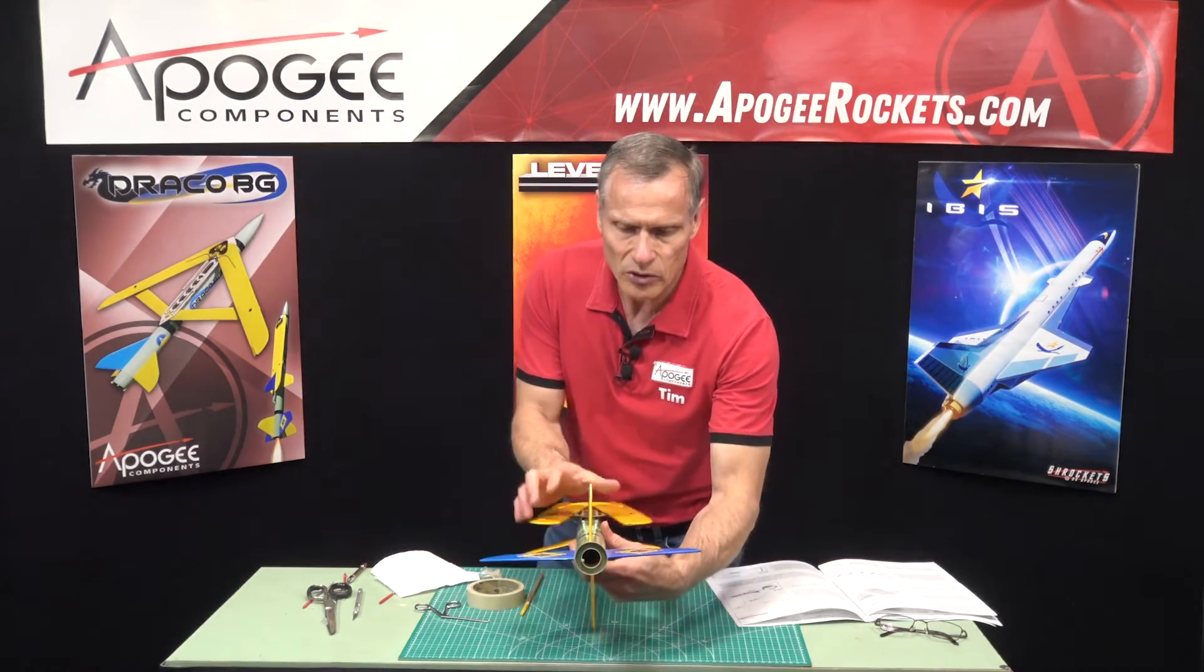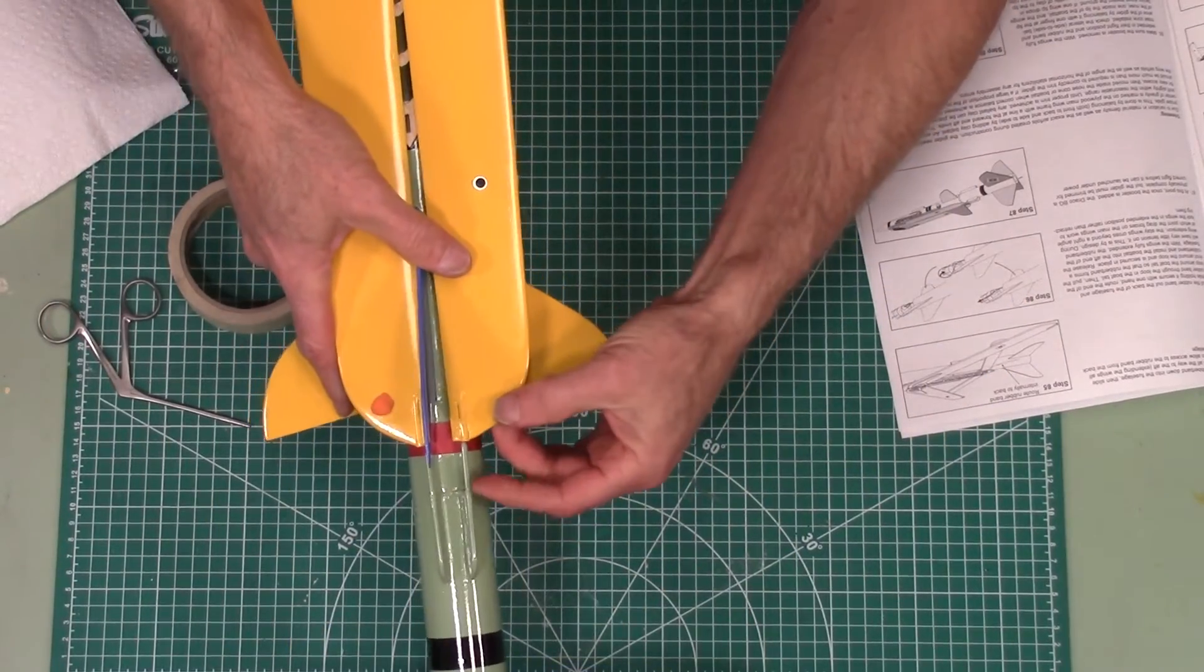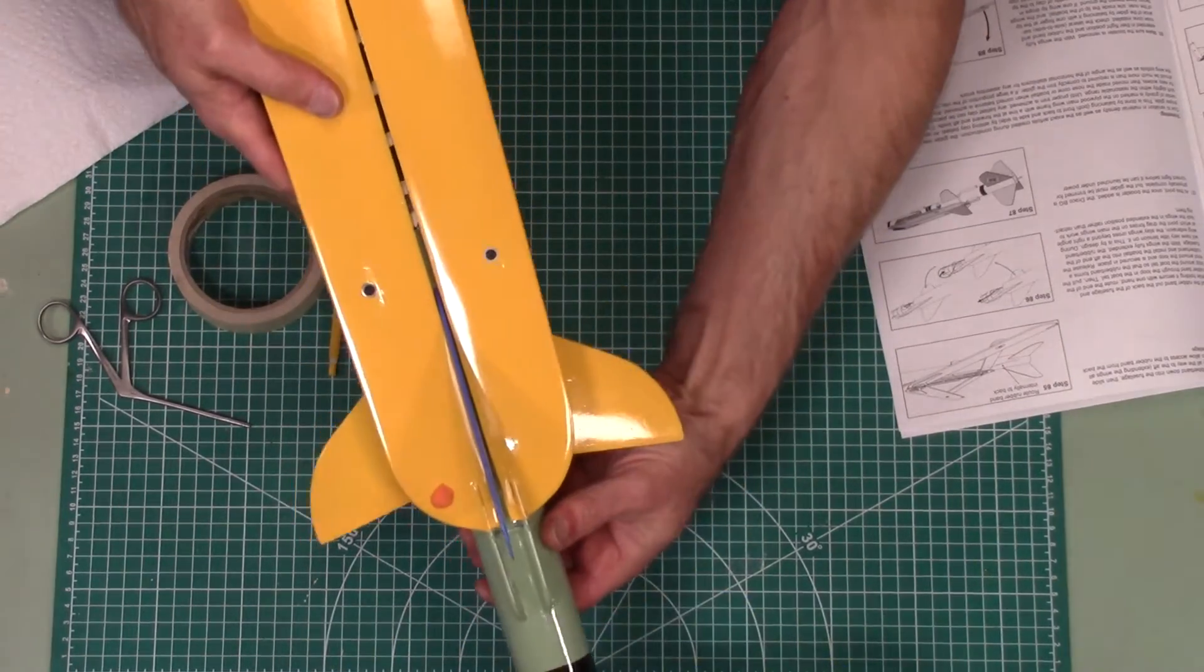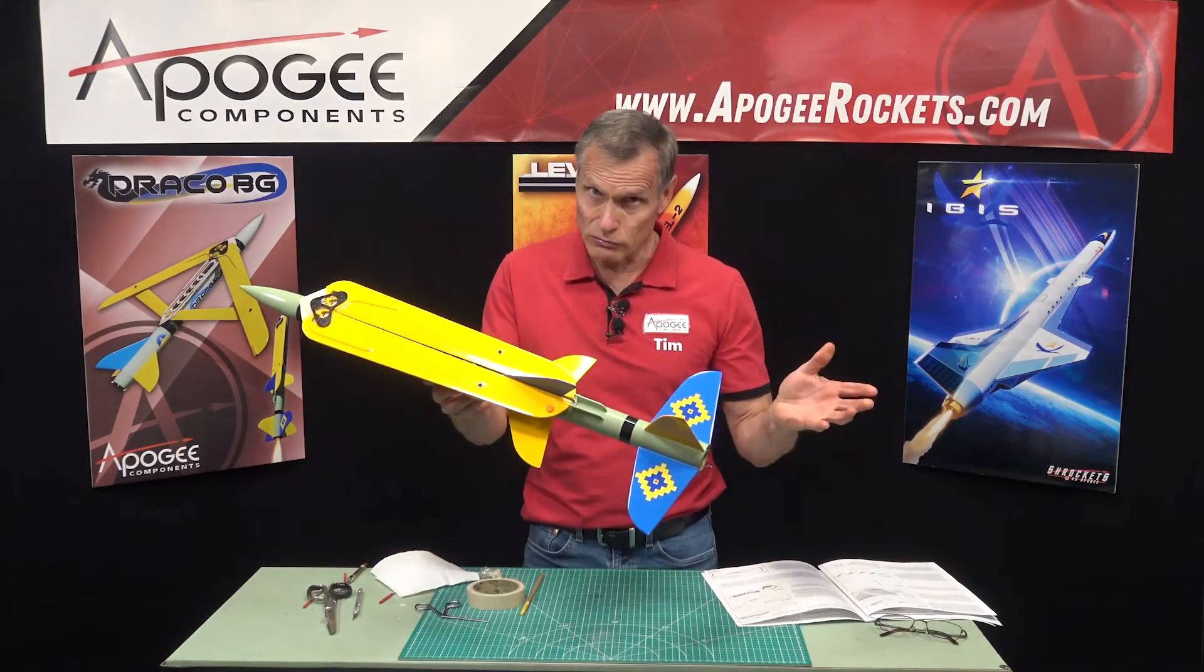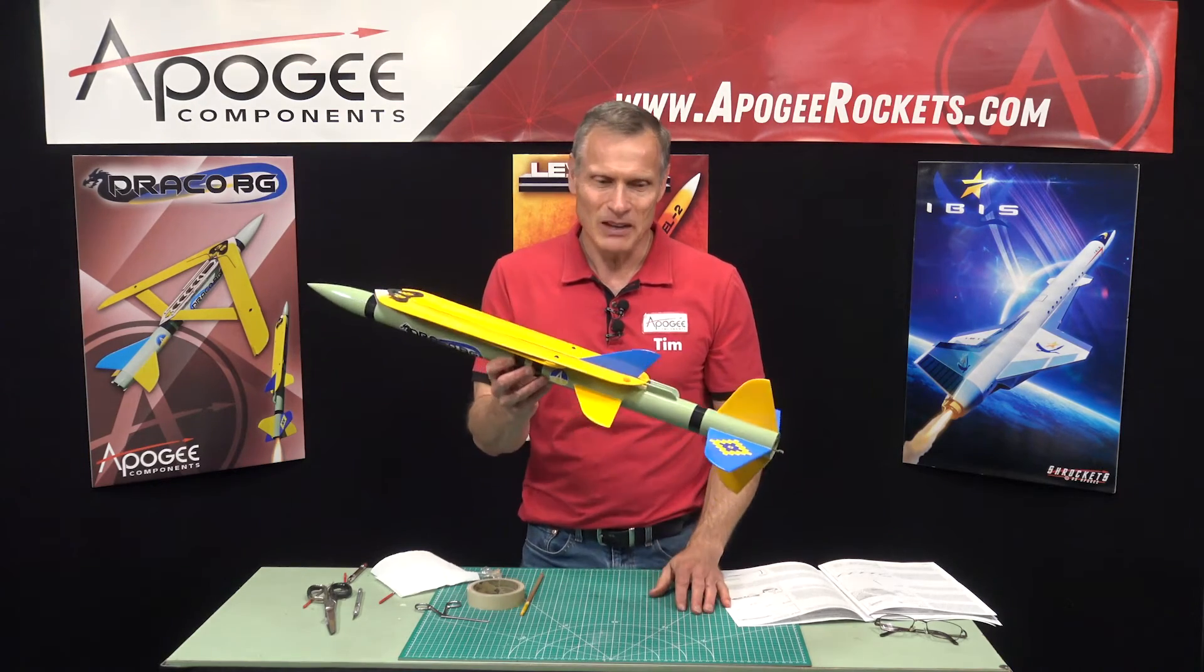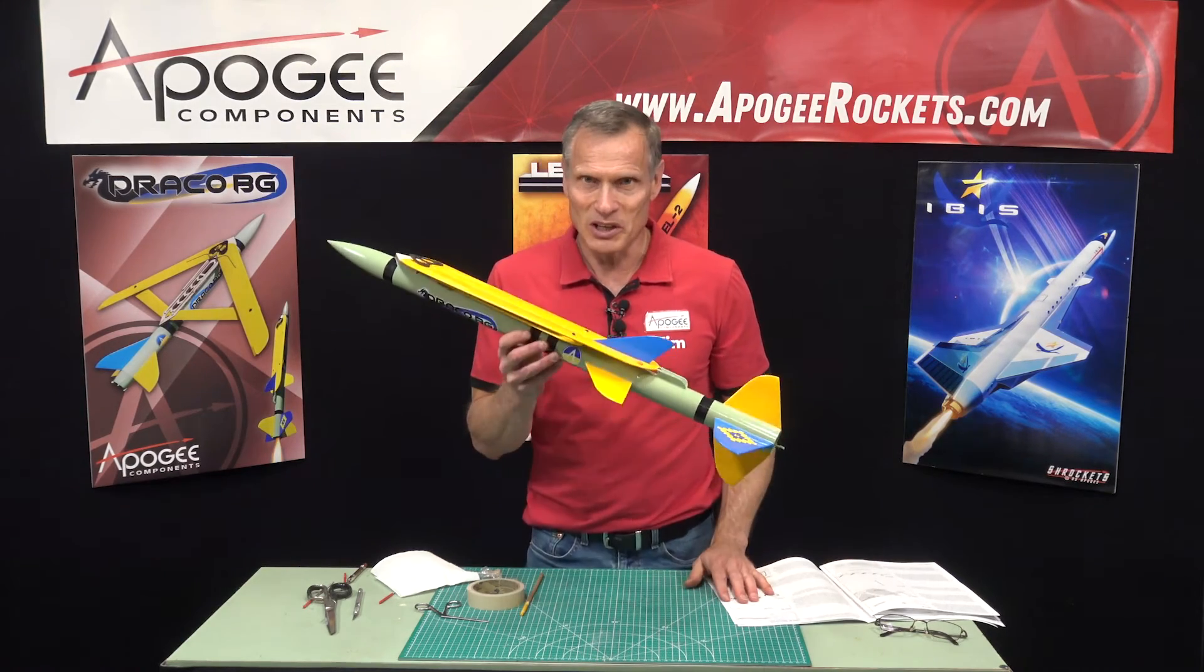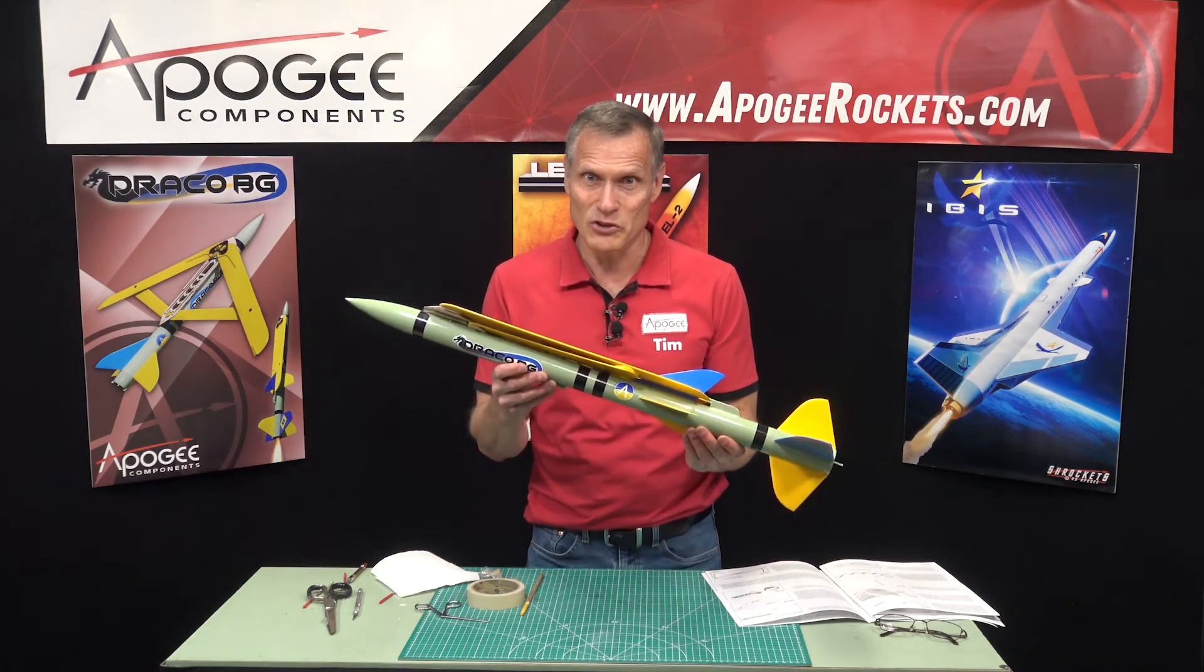And we have these launch lugs right here. And again, we want to find the one that has the longest pin. Get that one started first. And then you can get the other one in and slide it in like that. And then it's ready to go. All right. So this is the Draco. I'm sure you're going to enjoy it, launching it and building it and flying it. It's a challenge to build, but it is awesome when it works. So you're going to love the Draco.